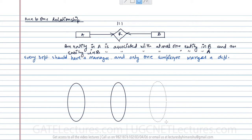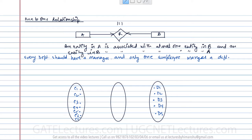We have employees a1, a2, a3, a4, a5, a6, and a7, and departments d1, d2, d3, d4, and d5. Every department should have a manager, but only one employee manages a department — that is what we mean by one-to-one relationship.